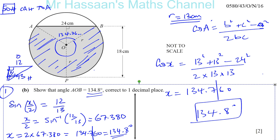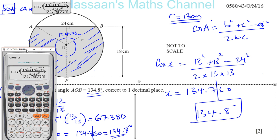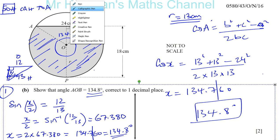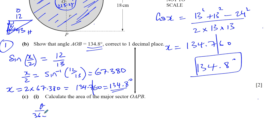So take the calculator again. You've got 360 minus the more accurate form, 134.760. That gives me 225.24. So the angle here is 225.24. I know that the area of a sector is given by the angle over 360. That's the fraction of the area that we need of the whole circle, which is given by pi r squared. So in this case, our angle is 225.24 divided by 360 times pi times 13 squared.